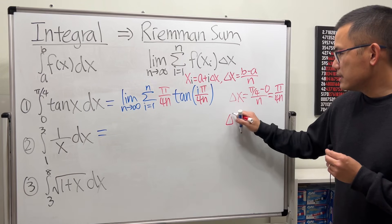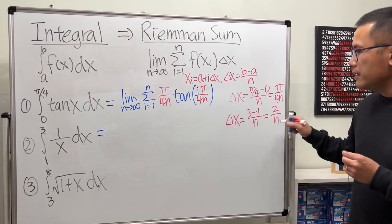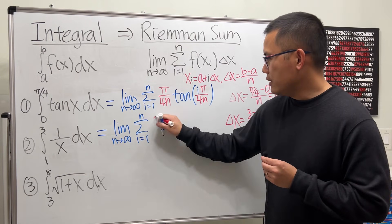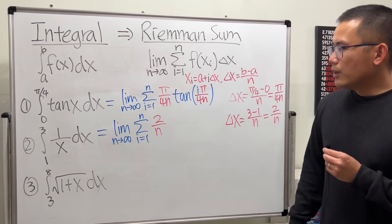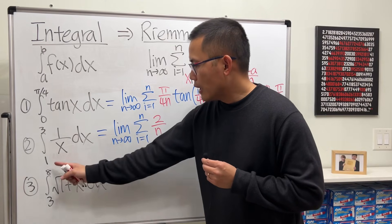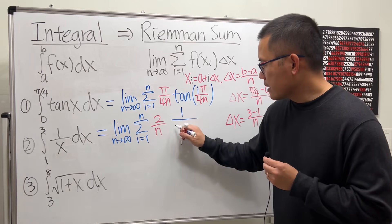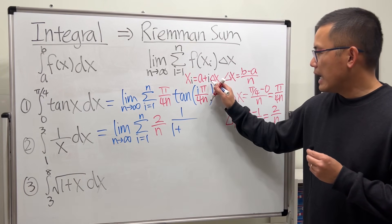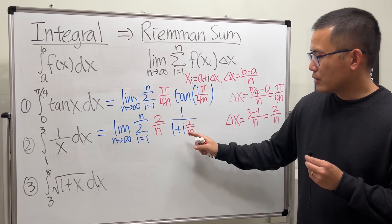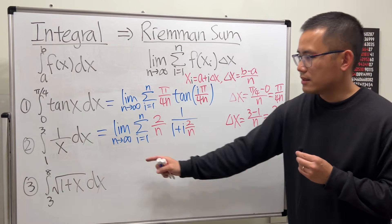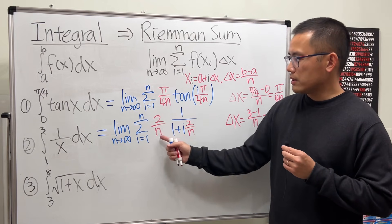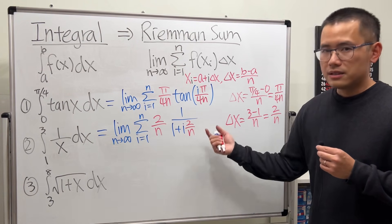For the integral from 1 to 3: delta x equals (3 minus 1) over n, which is 2/n. Write the limit as n→∞, summation i from 1 to n, put down delta x which is 2/n, and then the function with input a plus i·delta x. Since a equals 1, the input is 1 plus i times (2/n). So the Riemann sum is Σ (2/n) · [1 + 2i/n]^(whatever the function is). You can simplify, but this form clearly shows delta x and the input.